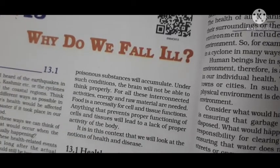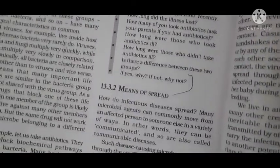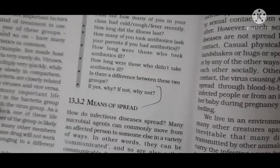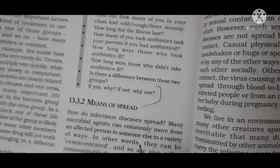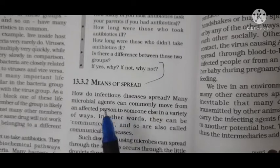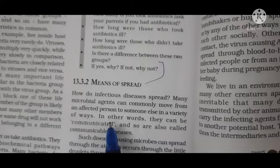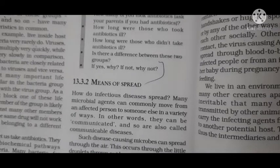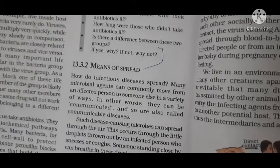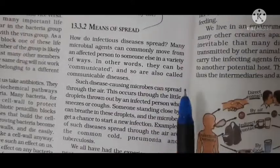Hello students, we will continue with the same chapter: 'Why Do We Fall Ill.' Please open page number 182 - Means of Spread. You know that communicable diseases or infectious diseases are caused by microbes. Microbes multiply very fast and carry the disease from the affected organism to the healthy one. There are a number of ways by which disease can be spread.